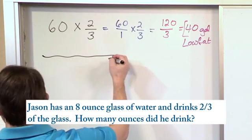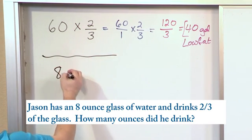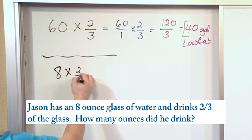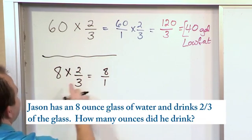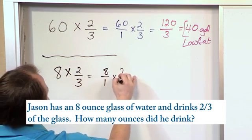So it's the same kind of thing. I want to translate it to math. I know that I have an eight-ounce glass of water, and I drink two-thirds of it. That means I multiply. So the eight becomes eight over one, and I'm multiplying by two-thirds.